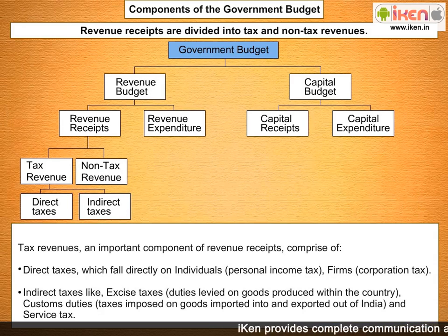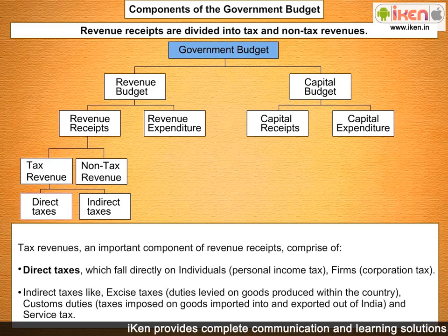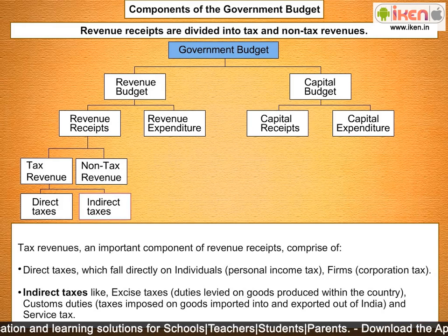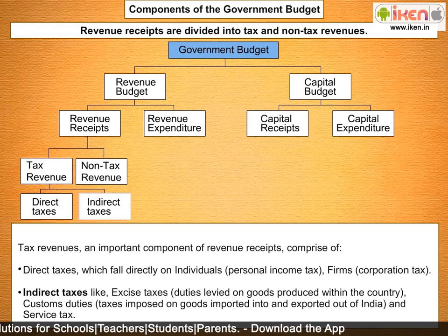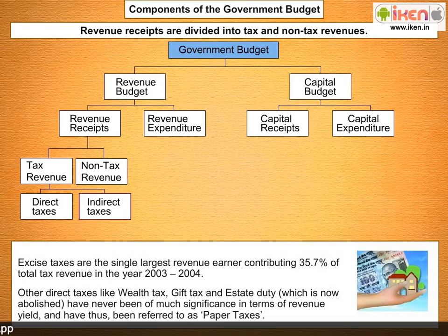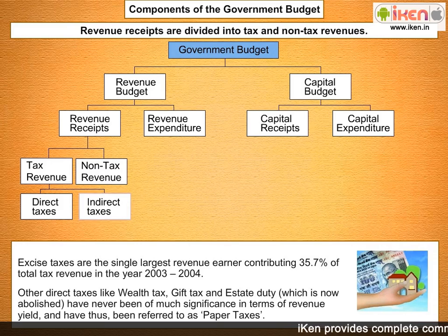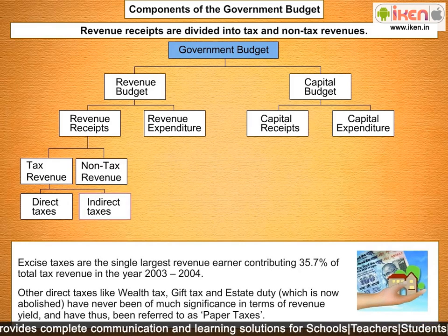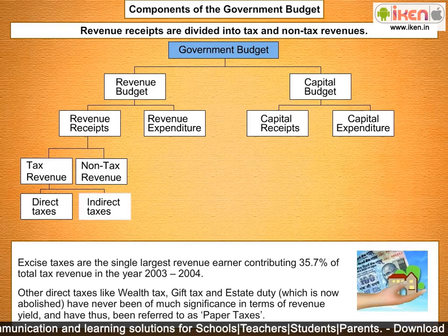Direct taxes are those taxes which have to be paid by the person on whom they are levied — their burden cannot be shifted to someone else. Indirect taxes are those levied on commodities and services, affecting the income of a person through their consumption expenditure; in this case the burden can be shifted to another person. Excise taxes were the single largest revenue earner, contributing 35.7% of total tax revenue in 2003–2004. Other direct taxes like wealth tax, gift tax, and estate duty have never been of much significance and have been referred to as 'paper taxes.'